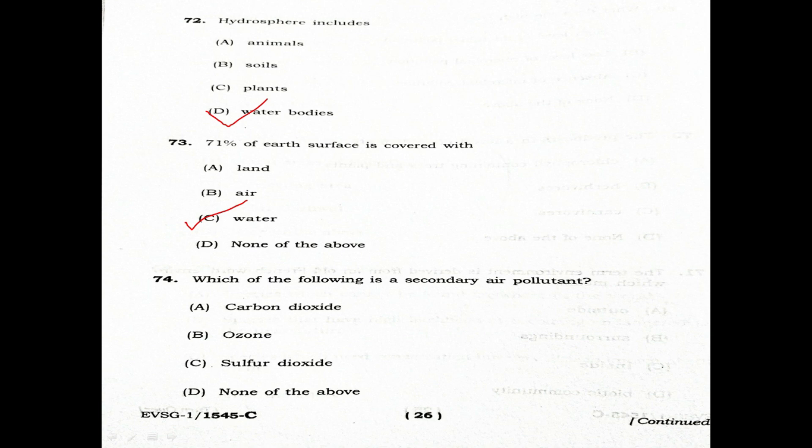Which of the following is a secondary air pollutant? Option A: Carbon dioxide. Option B: Ozone. Option C: Sulfur dioxide. Option D: None of the above. Ozone is the correct answer as a secondary air pollutant.